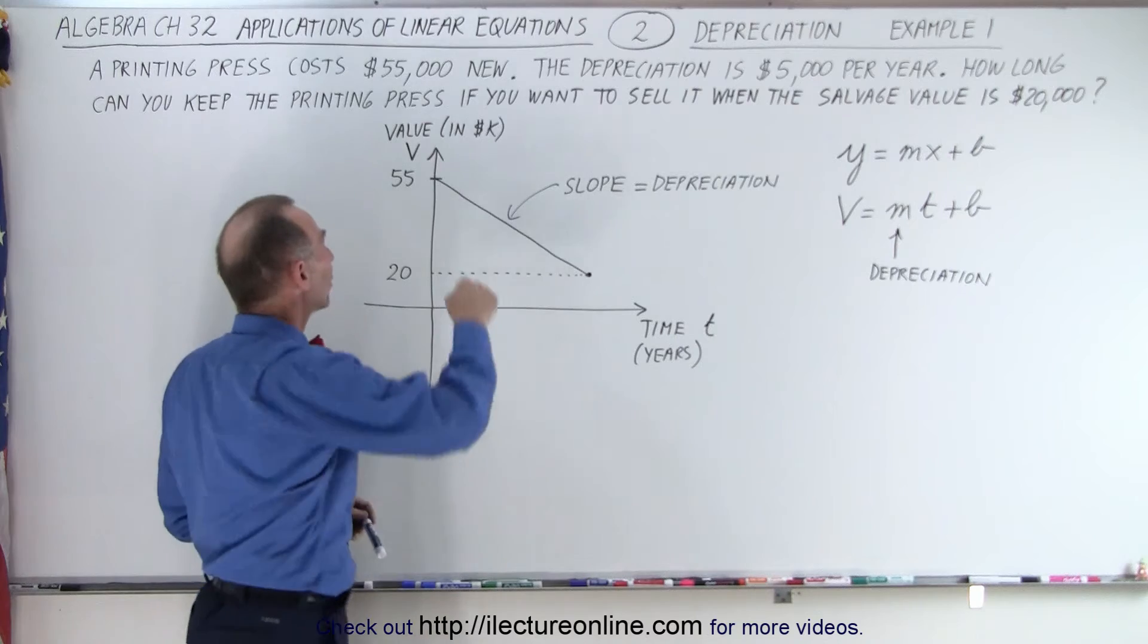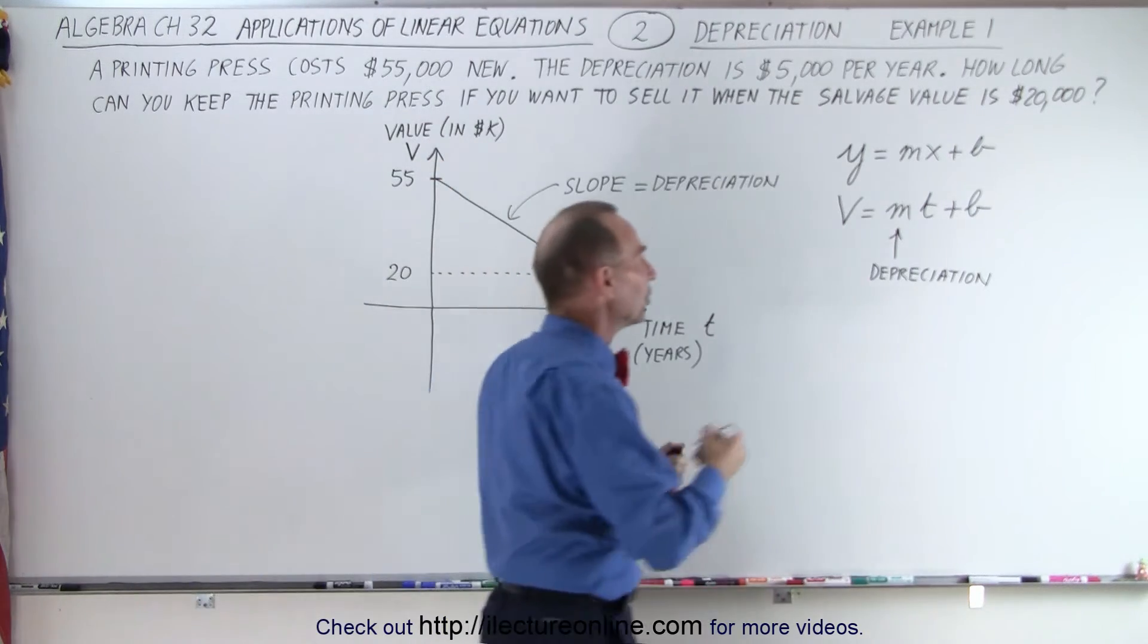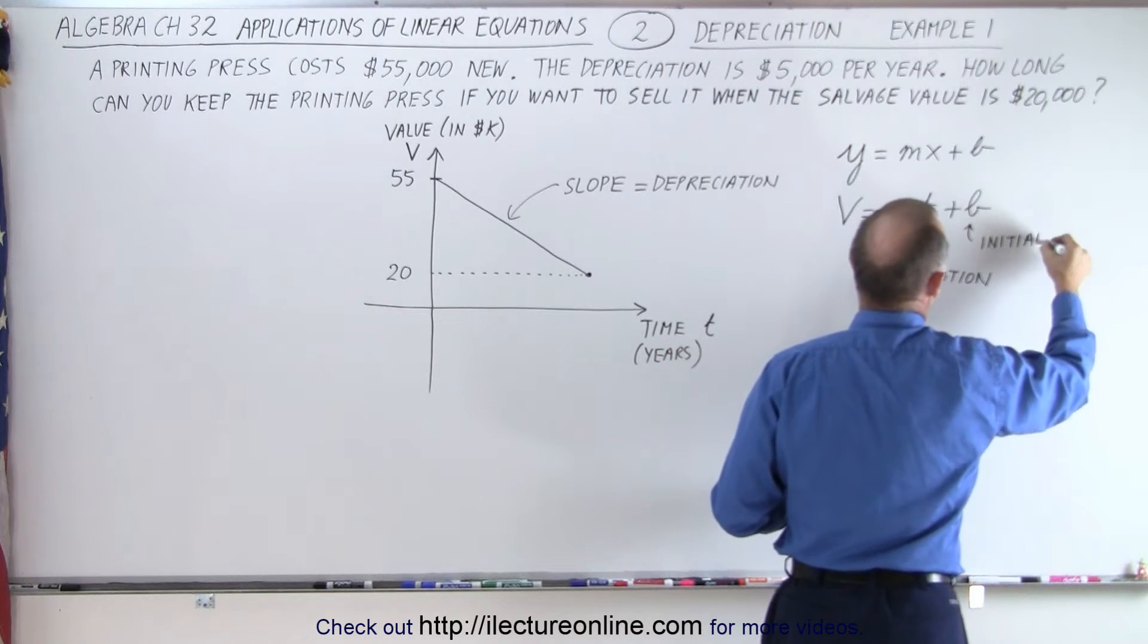B is where it crosses the vertical axis. So that's the initial value. B simply represents the initial value or the purchase price.